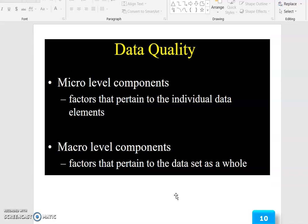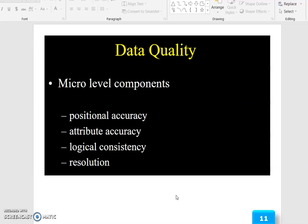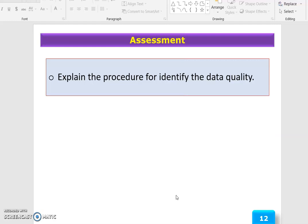There are micro level components, which are factors that pertain to the individual data elements, and macro level components, which are factors that pertain to the data set as a whole. Micro level components include positional accuracy, attribute accuracy, logical consistency, and resolution.